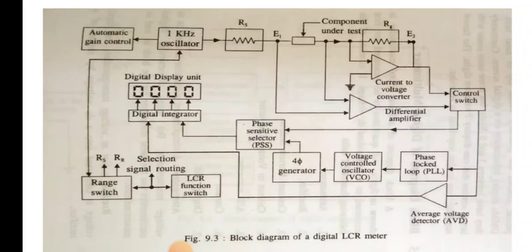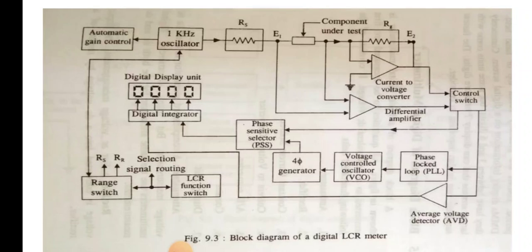E1 and E2 are related to the measurement of capacitance and inductance. Capacitance is inversely proportional to voltage, or C is proportional to E2/E1. Similarly, inductance is inversely proportional to current, or L is proportional to E1/E2. This ratio is very important.